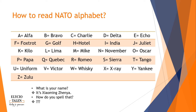Read this table and use the NATO alphabet to see how you can spell it. So the first letter would be X-ray, India, Alpha, Oscar, Mike, India, November, Golf. And my last name would be Zulu, Hotel, Echo, November, Yankee, and Alpha. This way you can help your listener better understand your name.